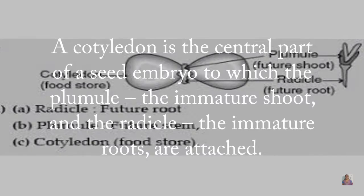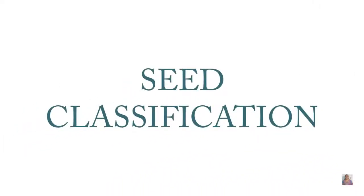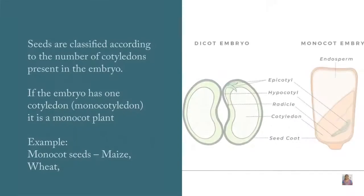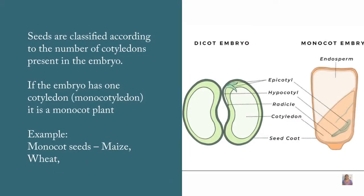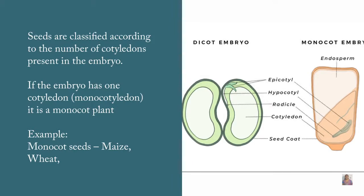The seed is classified in two different ways. First, they are classified based on the number of cotyledons present in the embryo. Based on this, seeds are divided into two types: dicotyledons and monocotyledons. If the embryo has only one cotyledon, then that is called a monocotyledon.